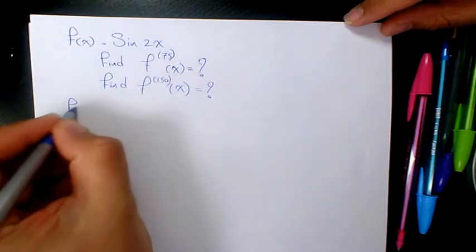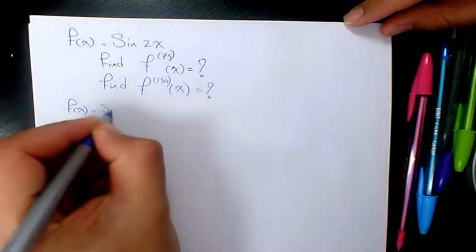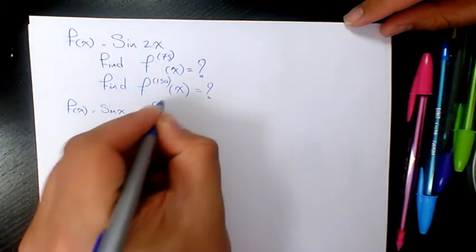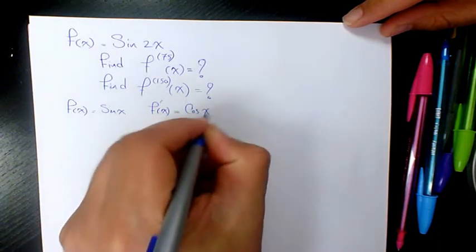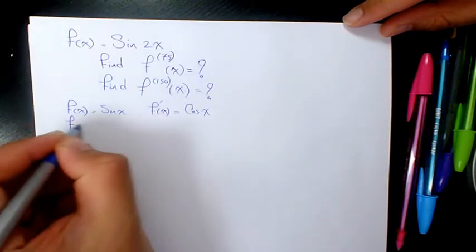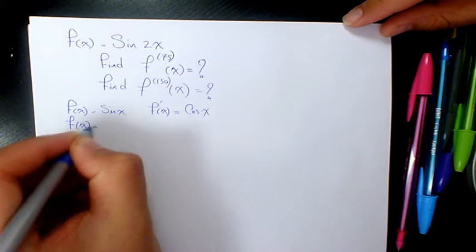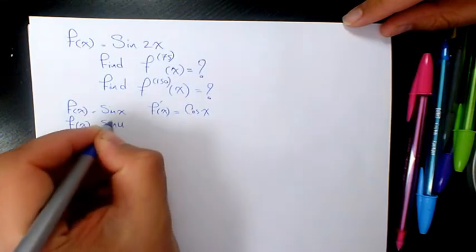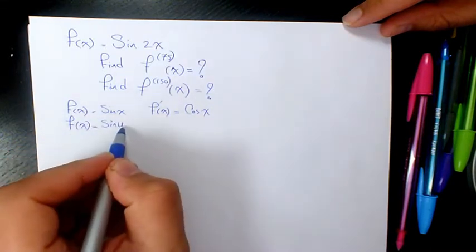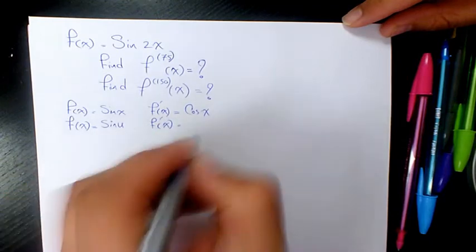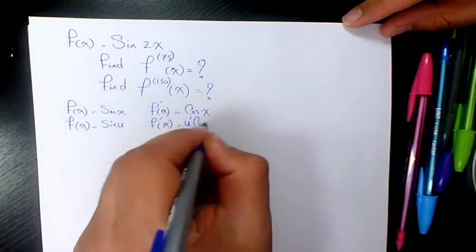So we know that if we have sine x, the derivative will be cosine x. If we have sine u, where u is a function of x, f prime of x is going to be u prime cosine u.